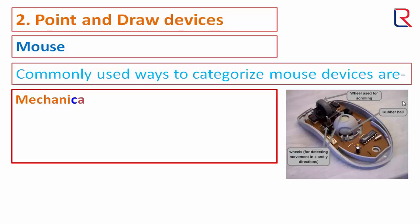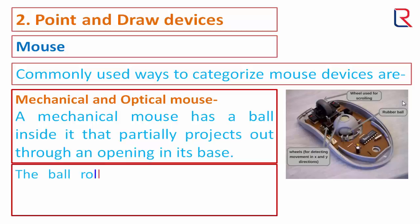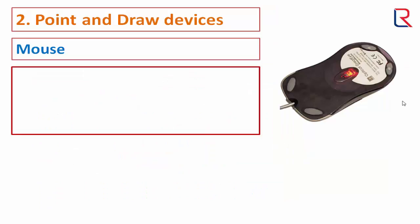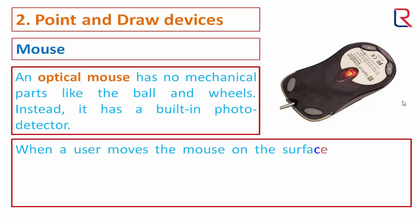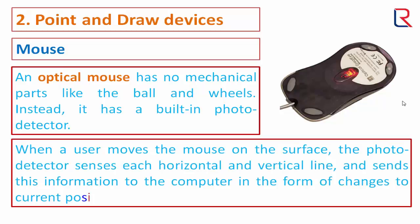Commonly used ways to categorize mouse devices are mechanical and optical. A mechanical mouse has a ball inside it that partially projects out through an opening in its base. The ball rolls due to surface friction when a user moves the mouse on a flat surface. An optical mouse has no mechanical parts like a ball; it has a built-in photo detector.